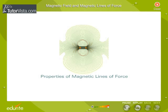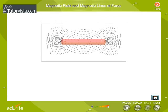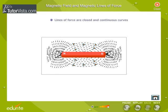Properties of Magnetic Lines of Force. Let us now summarize the properties of lines of force. They are closed and continuous curves.